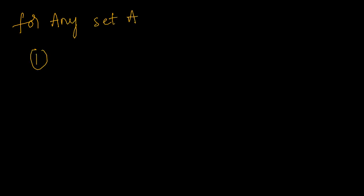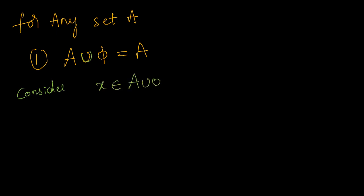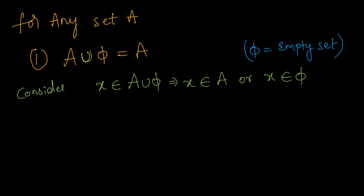What is the first identity law? For any set A, A union φ equals A — this is what we need to prove. Here the union symbol is used and φ is the empty set. Let us consider one element from the left hand side: let x belong to A union φ. Union means either x should be in set A or either it should be in set φ.